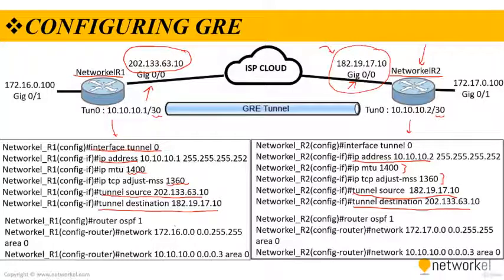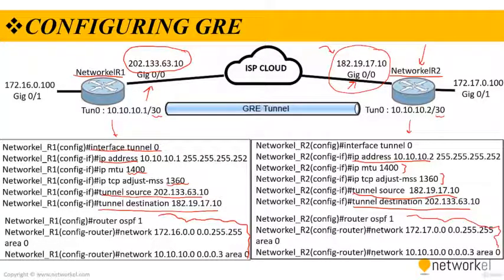Then we configure OSPF to advertise the networks — the 10.10.10.16 and 10.10.10.0 networks on router 1, and the 10.10.10.17 and 10.10.10.0 networks on router 2.